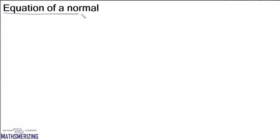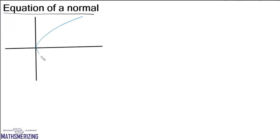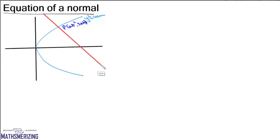In this video we will discuss another very important fundamental in case of a parabola, which is the equation of a normal. Suppose we have a parabola y² = 4ax. From any point on this parabola, say at parameter t which is (at², 2at), a normal is drawn. We know that for any point P lying on the parabola at (at², 2at), the slope of the tangent is given by 1/t, so the slope of the normal will be -t.